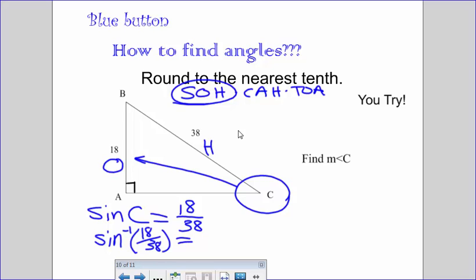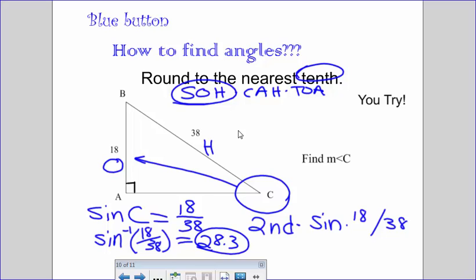So again, this in your calculator is second, and then you're going to press sine, and then you're going to press 18 divided by 38. And that will come out to look like what we just typed in here. Your answer as a decimal, it says round to nearest tenth. It's going to be 28.3. So angle C is 28.3 degrees.